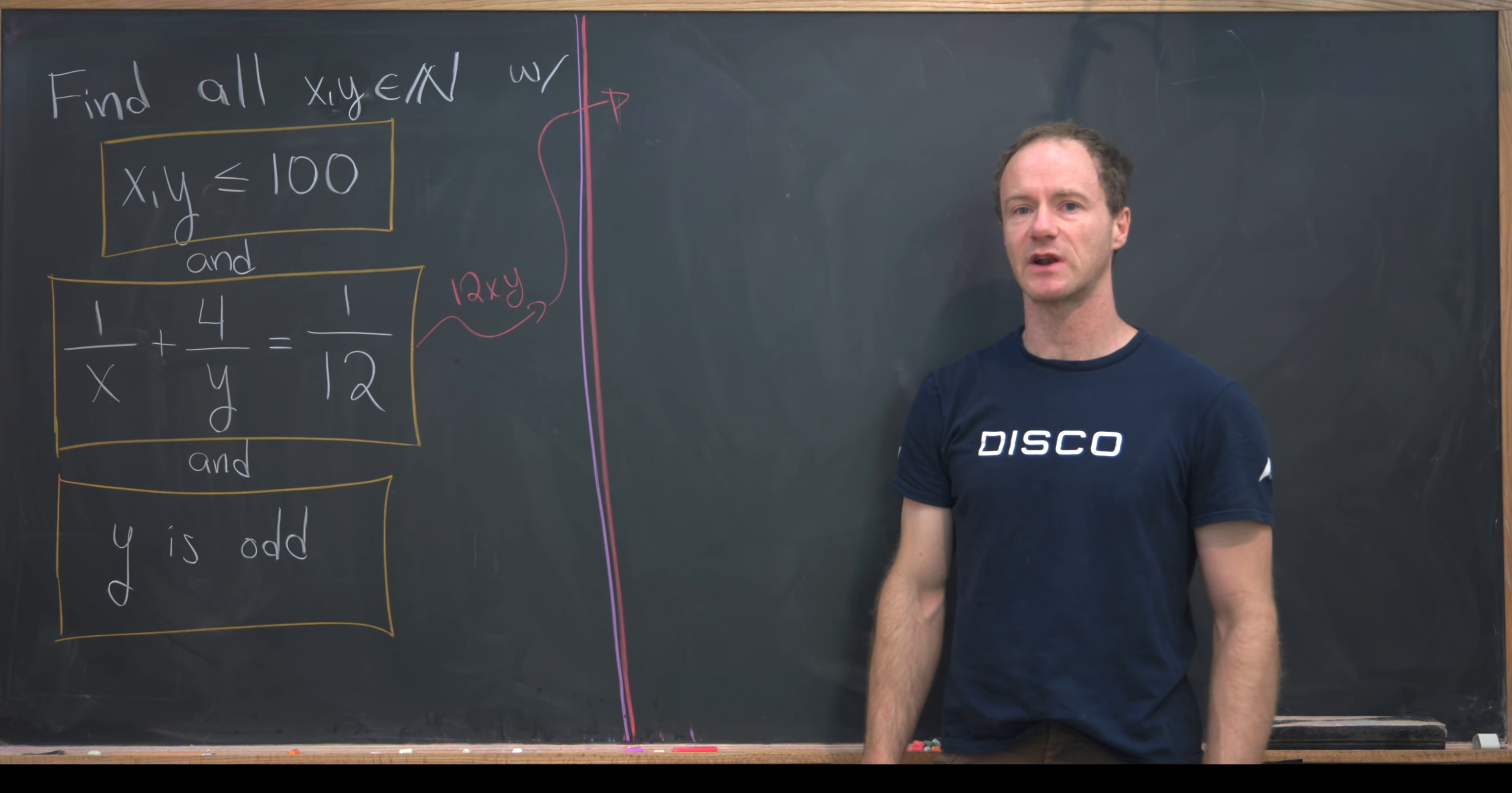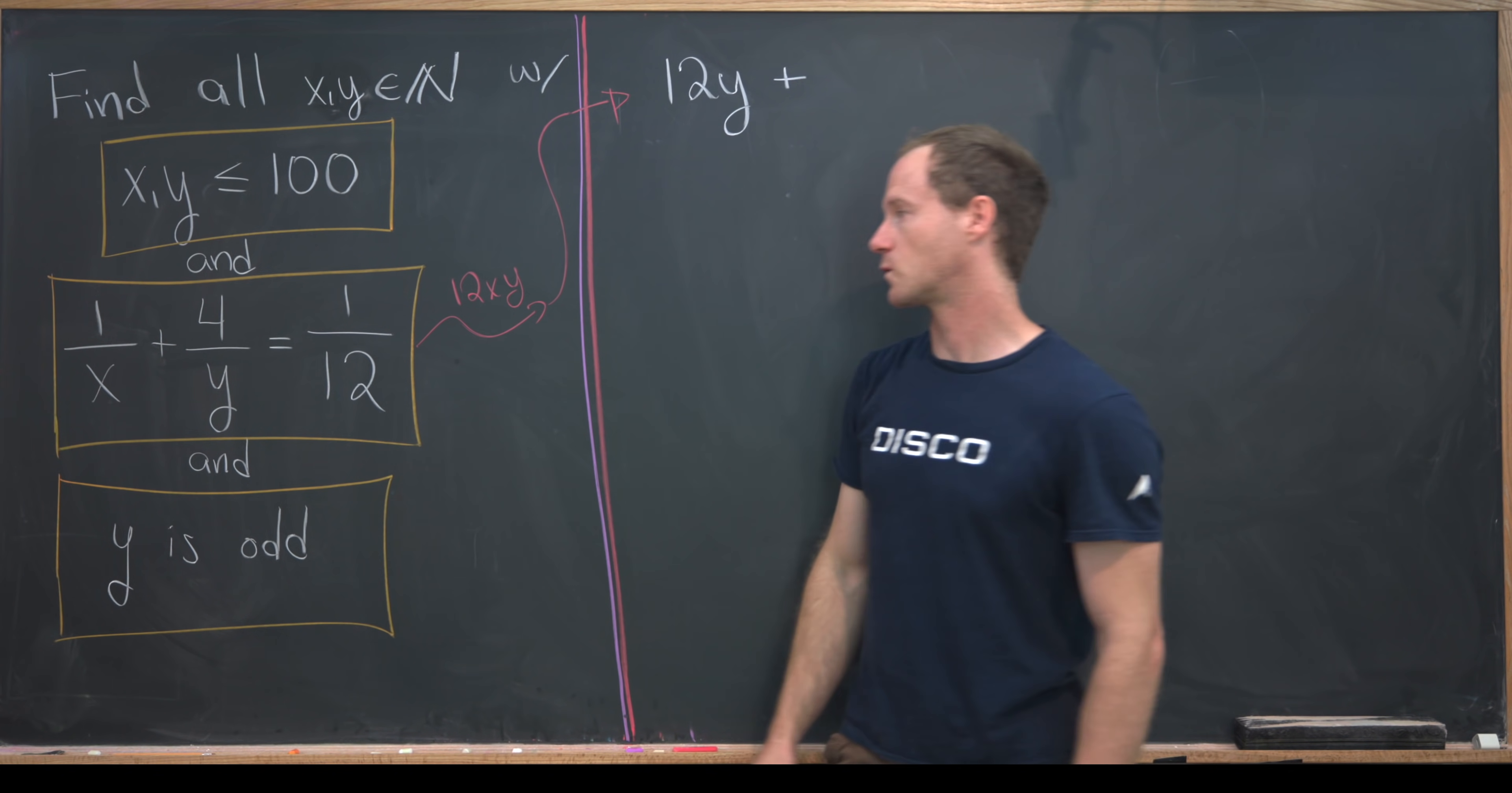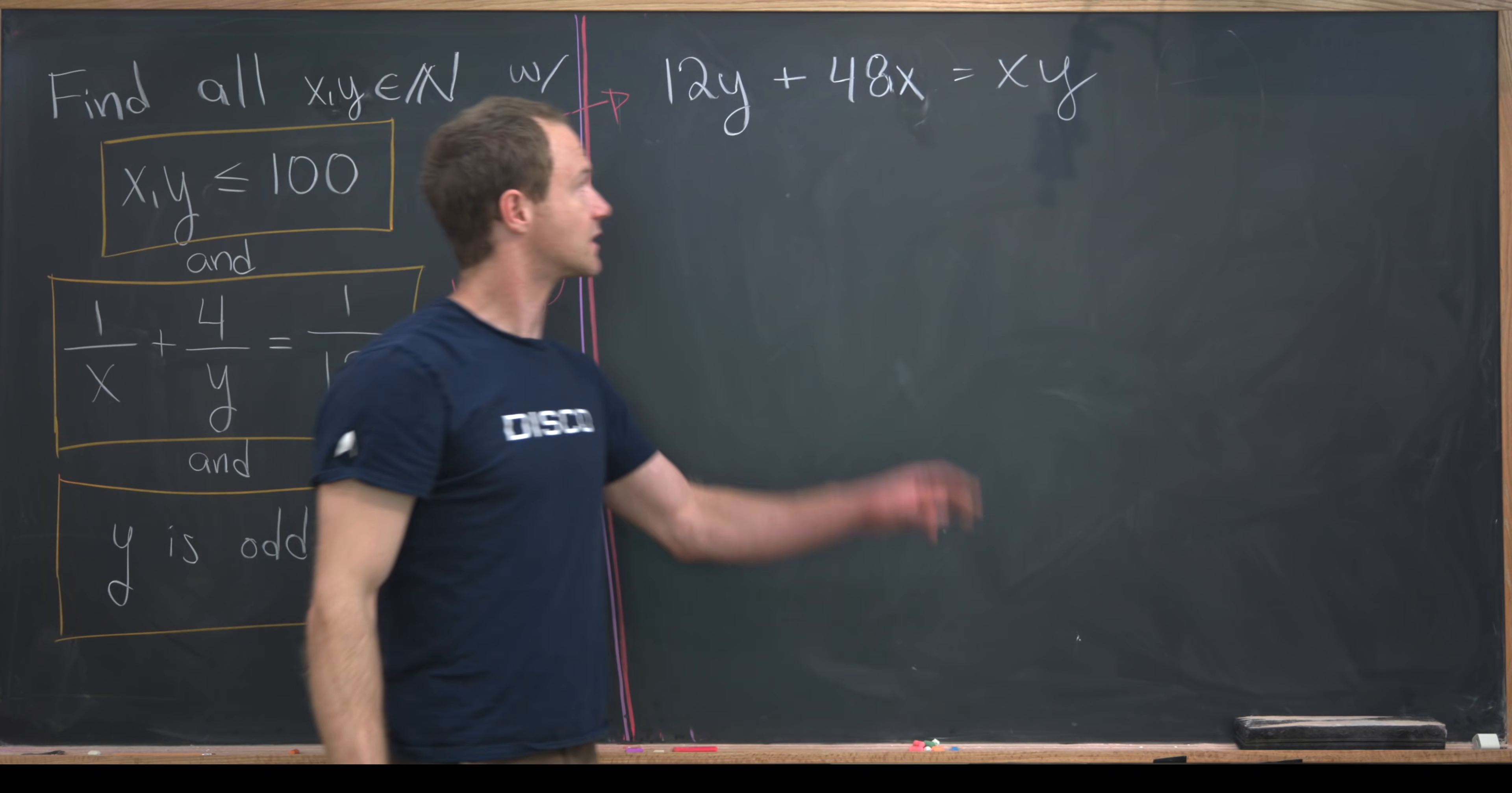Let's see what our new equation is. 12 times x times y times 1 over x is just 12y. 12 times x times y times 4 over y is 48x. And then 12 times x times y times 1 over 12 is just xy. So now we've got this polynomial equation: 12y plus 48x equals xy.